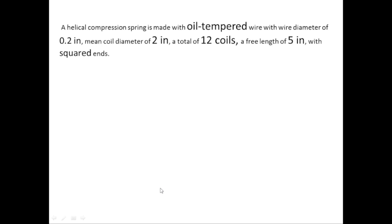Today's tutorial is on problem 10.5 which is a helical compression spring made of oil-tempered wire with wire diameter of 0.2 inches and mean coil diameter of 2 inches. The spring has a total of 12 coils and its free length is 5 inches with squared ends.